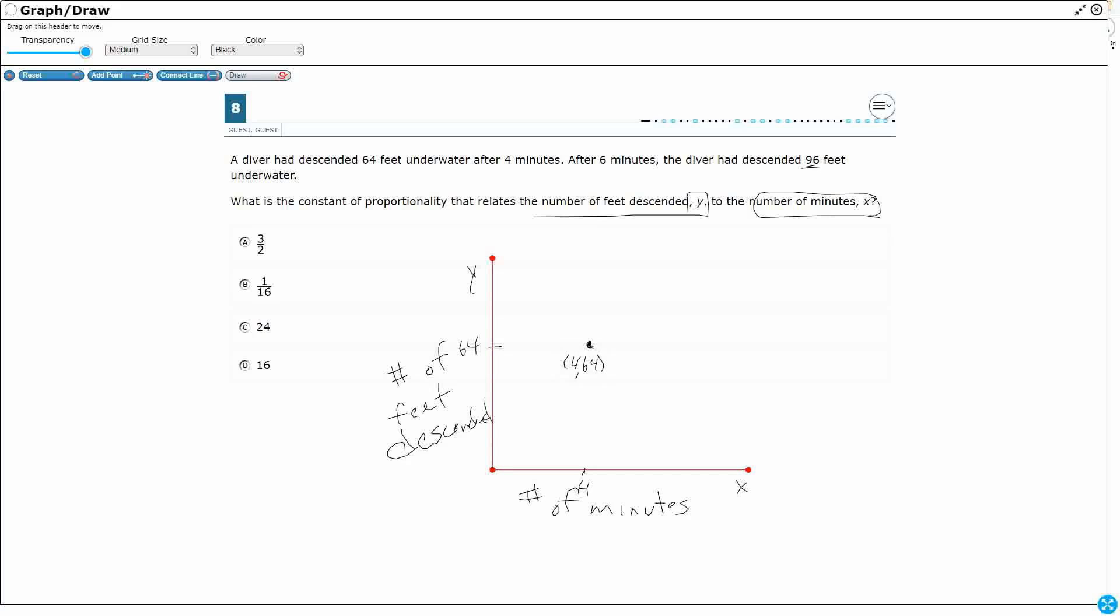And then 96 feet underwater after 6 minutes. So we're going to move forward a little bit to 6 minutes, and then 96 feet underwater. So that maybe goes up there. We don't really need this graph, but I just want us to visualize what exactly we're looking at. These are feet underwater. If we wanted to, we could actually flip this graph upside down and have them going lower and lower. But really what we're looking at is the constant of proportionality.